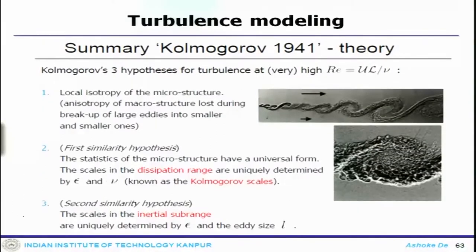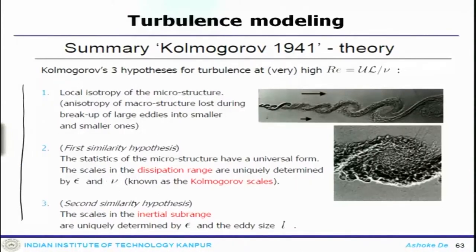Kolmogorov provided a theory with three hypotheses: one is local isotropy of the micro structure, then the statistics of the micro structure have a universal form. That is why the scales in the dissipation range are quickly determined. Details can be found in any textbook on turbulence.